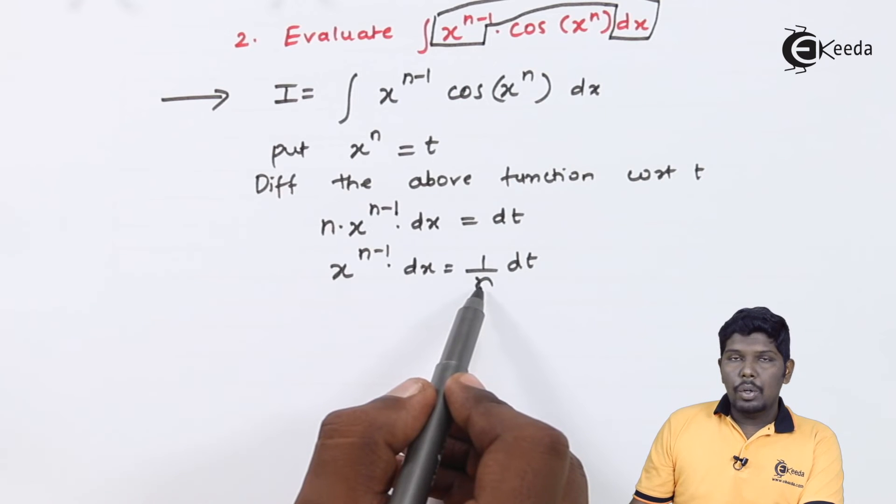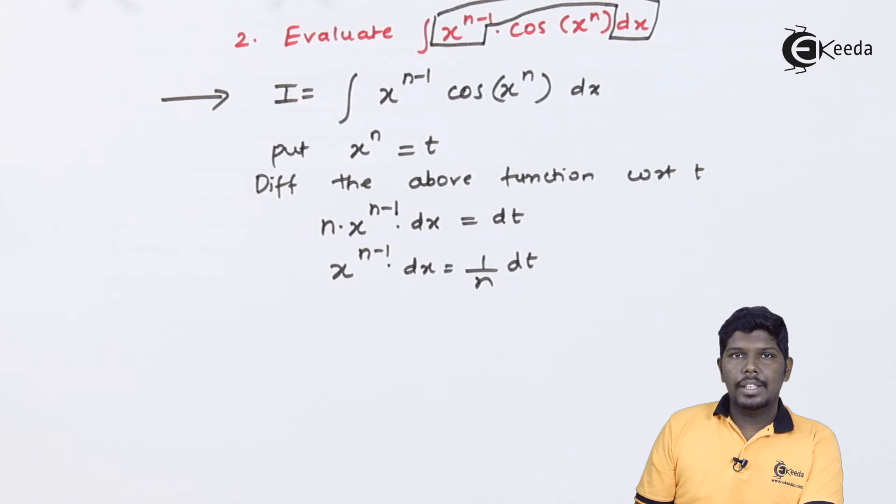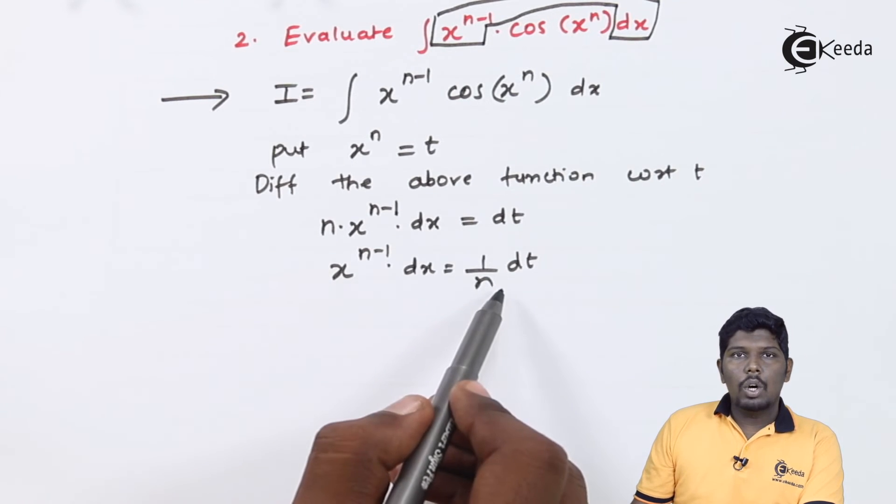Remember friends you can transfer only the constant part on the right hand side. You can never take x on the right hand side.